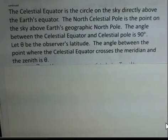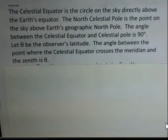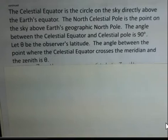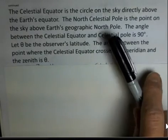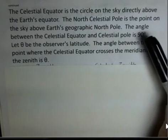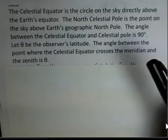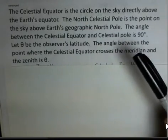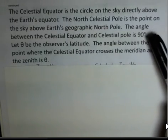It looks like the stars are embedded on the celestial sphere. Of course, they are not — there's a three-dimensional aspect; some stars are close to us, some are further away. But for this discussion, we're just going to use this concept of the sky. There's a celestial equator circle on the sky everywhere directly above the Earth's equator. The North Celestial Pole is a point on the sky that's right above the Earth's geographic pole, and there's 90 degrees of angle between the equator and the pole, both on the Earth and on the sky.